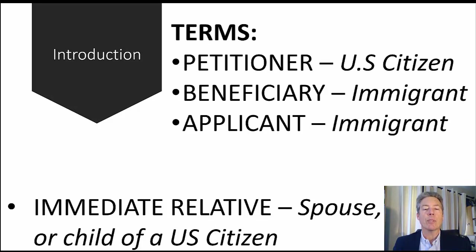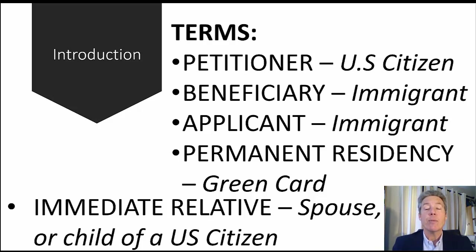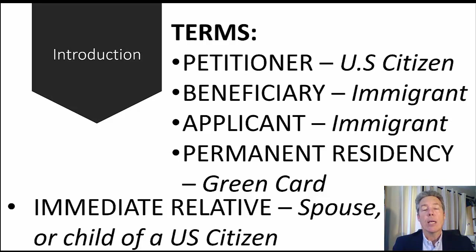We're going to talk about terms. We have our petitioner, which is a U.S. citizen; the beneficiary, which is the immigrant, also called the applicant, that's going to be the immigrant coming in. Permanent residency is also called a green card. An immediate relative — this is a key term — is the spouse, parent, or child of a U.S. citizen. The immigration service is more supportive of immediate relatives immigrating to the United States than non-immediate relatives.